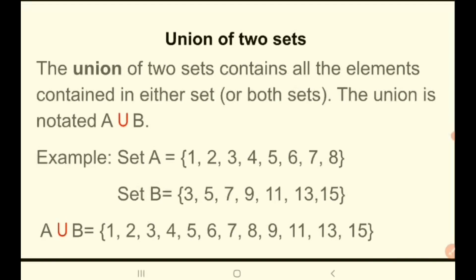On the other hand, the union of two sets contains all the elements in either set or both sets. The union is noted by a symbol looking like a U. Using the same sets — set A with elements 1, 2, 3, 4, 5, 6, 7, 8 and set B with elements 3, 5, 7, 9, 11, 13, 15 — the union combines all the elements together. Union comes from the word unite. When writing the union of two sets, you do not repeat any element; list all elements but do not repeat any.